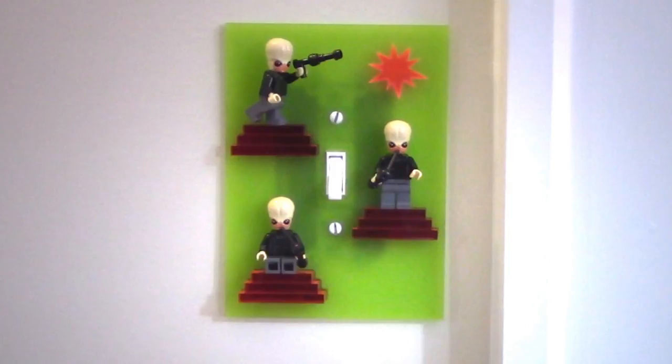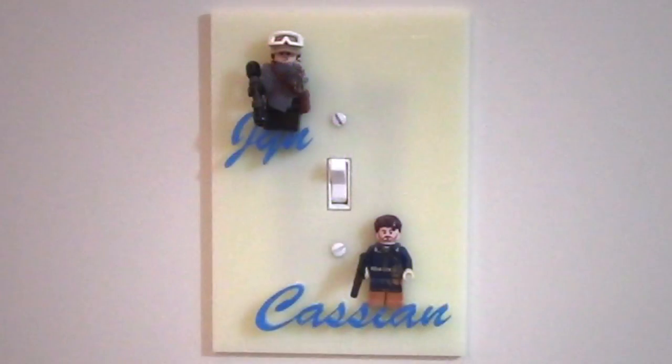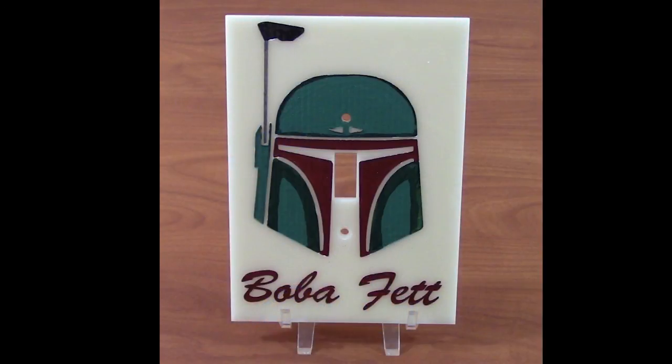One thing I would do differently is I would use more opaque acrylics for the switch plate itself because you can see the shadow of the opening in the wall behind it. I think a mirrored acrylic would work really well for this.